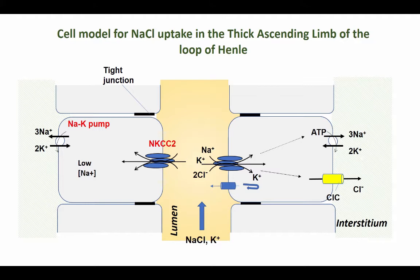As I told you previously, if you have a counter current multiplier, the transport is going to be active. And if you look at the basolateral membrane on the cell on the left and the right side, you will see that on the basolateral membrane, furthest away from the tubular lumen, we have sodium-potassium pumps.